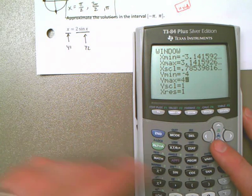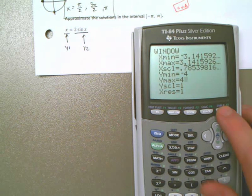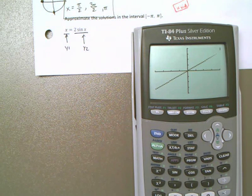My y values, I'm going to go from like negative 4 to 4. That would be good enough to see everything you need to see. And my tick marks are going to go by 1. So here we go. Let's graph it.